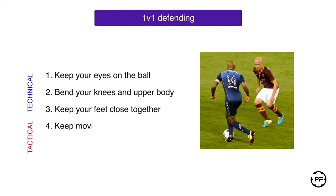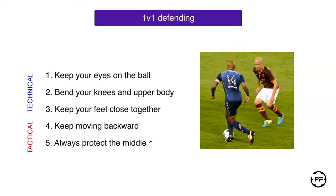Keep moving backward in accordance with the attacker's speed using sideways positioning. The goal is to decrease the distance between you and the attacker by gradually slowing him down. Always protect the middle area and try to push the attacker toward the sideline, as shooting from the middle area is essentially more dangerous than shooting from one of the outside channels.